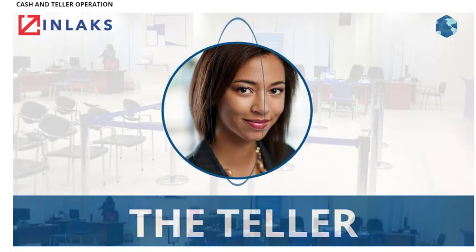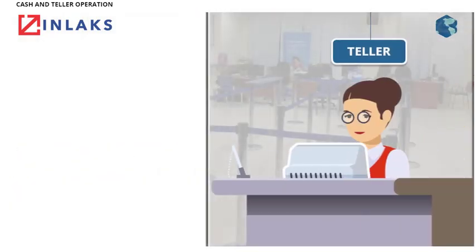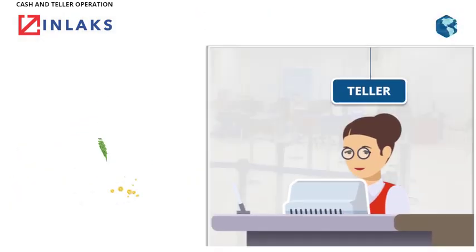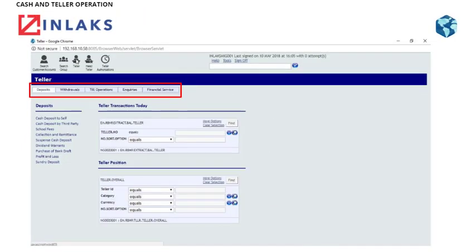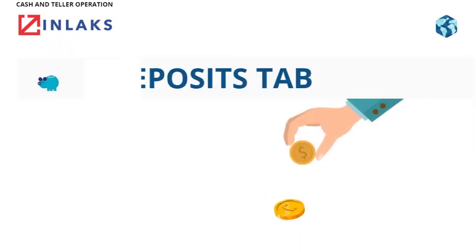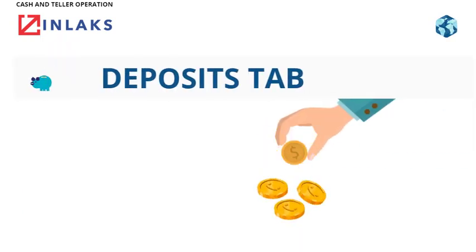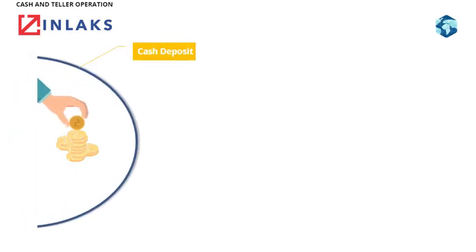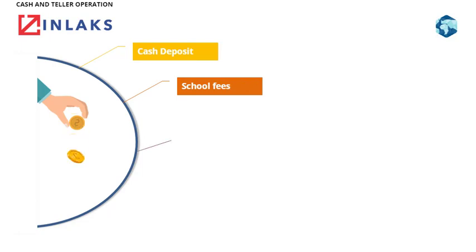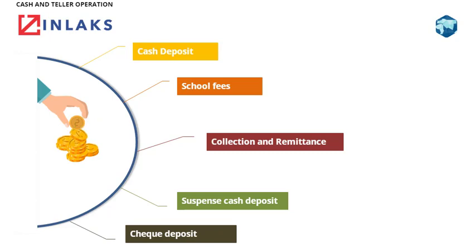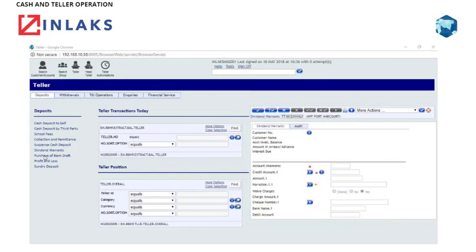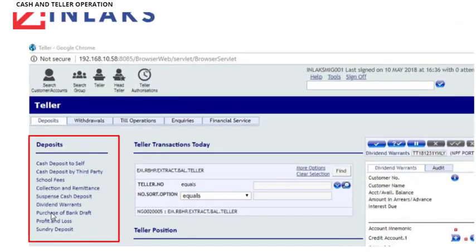The Teller performs most of the transactions in the bank. The following screen shows what the Teller can do in the Teller menu and how to achieve the tasks. Deposits Tab: Various types of deposit transactions are carried out here, such as cash deposits, school fees, collection and remittances, suspense cash deposits, and check deposits, among others. To make a deposit transaction, click the application for the type of deposit required.